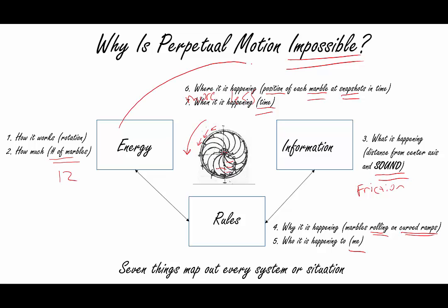Since energy is leaving the system, you know the machine will eventually slow down, slow down, slow down, and eventually stop. And that's how you know that perpetual motion is impossible.